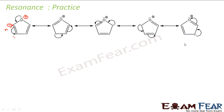The electrons jump in pairs — from oxygen to one carbon, then since that carbon cannot hold 10 electrons, they jump to the next carbon and so on. Here also, electrons jump from this carbon to the next carbon, but since that carbon cannot hold 10 electrons, the electrons move further. In all these cases electrons jump from one position to another, breaking bonds and forming new ones, creating many resonating structures.